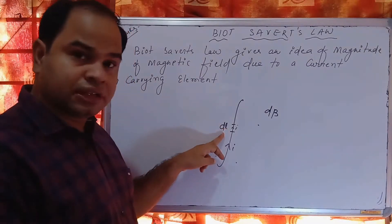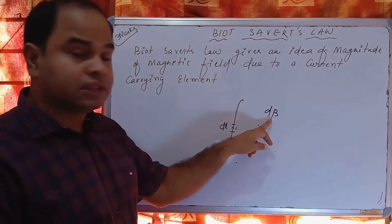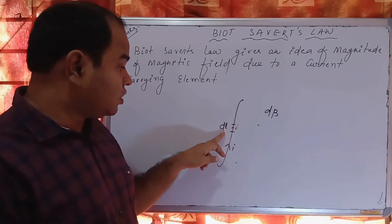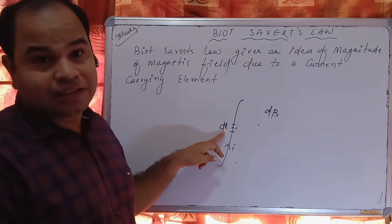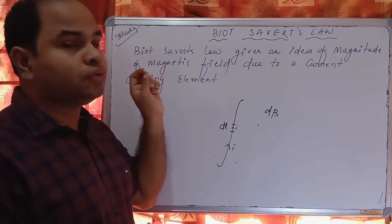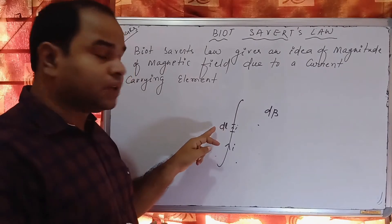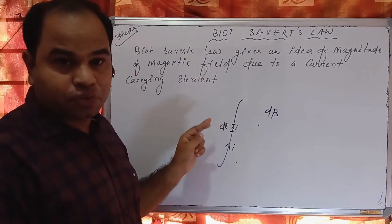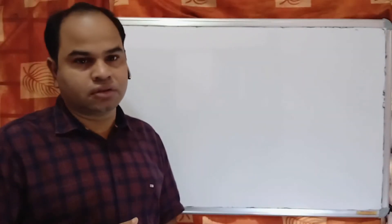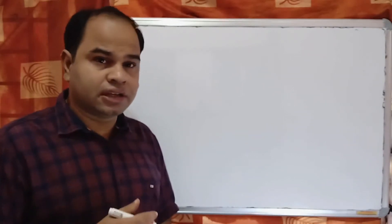This small length carrying current I produces a small magnetic field at a point. dB is the small magnetic field produced by the small current-carrying length. Biot-Savart's law gives the formula for the magnitude of magnetic field produced by the current-carrying element.